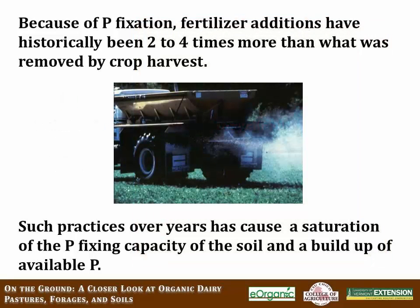Historically, our crops and our fields have been very deficient. In the past, people have recommended putting on like two to four times the amount of what was actually needed by the crop, just so the crop would get what it actually needed. But even though the crop was getting what it needed, the rest of that phosphorus is sort of getting bound up, and over time everything is saturated — we've just put on too much.